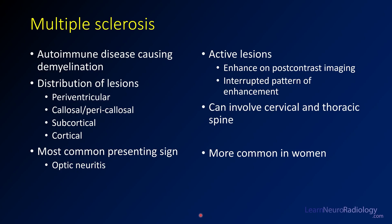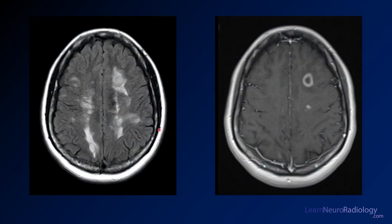This is what multiple sclerosis looks like. MS is an autoimmune demyelinating disease. You tend to get lesions that are periventricular, in the corpus callosum or pericallosal regions, and also subcortical and cortical lesions. The most common presentation is optic neuritis or visual changes. Active lesions enhance on post-contrast imaging and represent an active inflammatory component. MS can involve the cervical and thoracic spine and is more common in women.